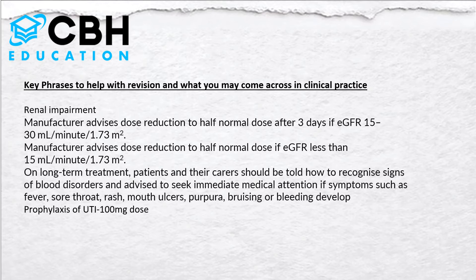Some patients develop resistance to trimethoprim over the course of long-term treatment, and are therefore switched to other agents such as nitrofurantoin. For prophylaxis, patients may rotate between different antibiotics to reduce the risk of resistance — for example, trimethoprim, then a course of nitrofurantoin, then cefalexin. If you encounter this on a repeat prescription, that may be the rationale.